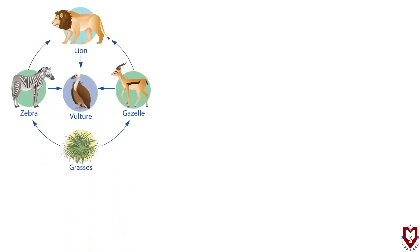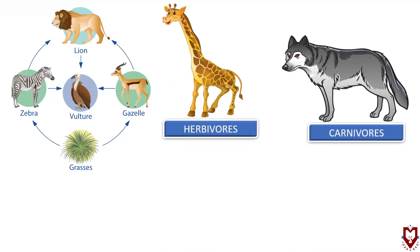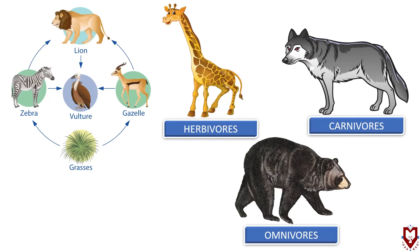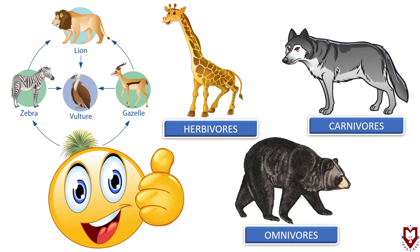Animals either eat plants directly or they eat the flesh of animals that eat plants. We can learn a lot from different animals and their feeding habits. Till then, stay happy, stay healthy. See you in the next video.